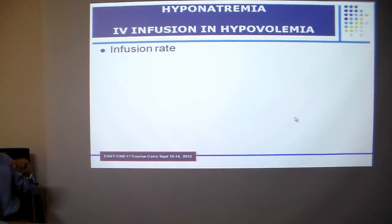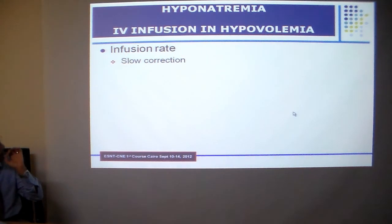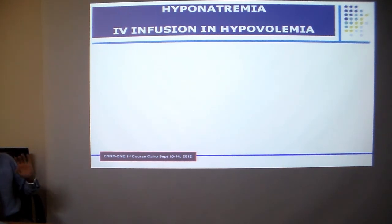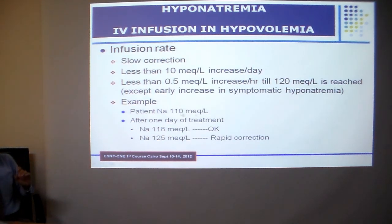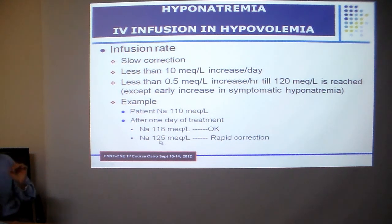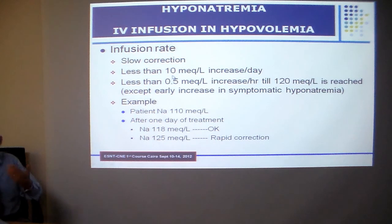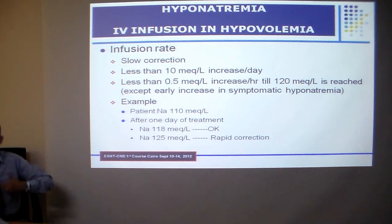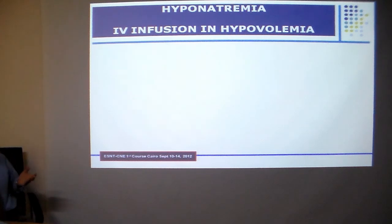When IV saline is needed, the rate of infusion must be very slow to avoid osmotic demyelination syndrome. Do not increase serum sodium by more than 10 milliequivalents per day during the first day of treatment. For example, if your patient has a serum sodium of 110 and you raise it to 125 by end of day, you have caused a catastrophe — an increase of more than 10 mEq — and that patient is exposed to osmotic demyelination syndrome. In such a case, re-lower sodium by giving dextrose 5%.